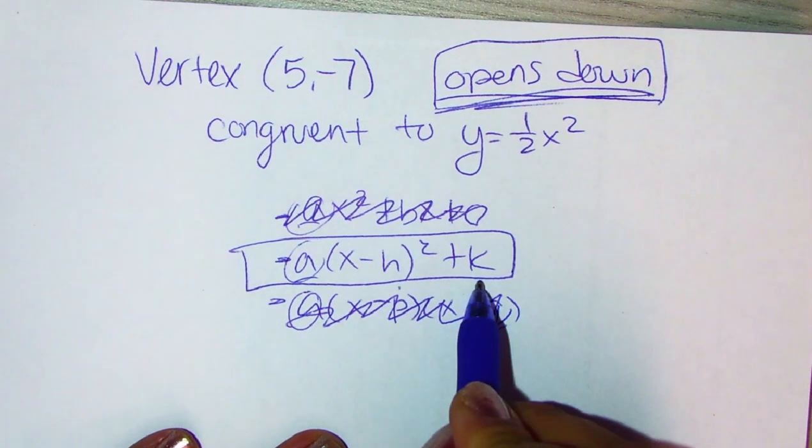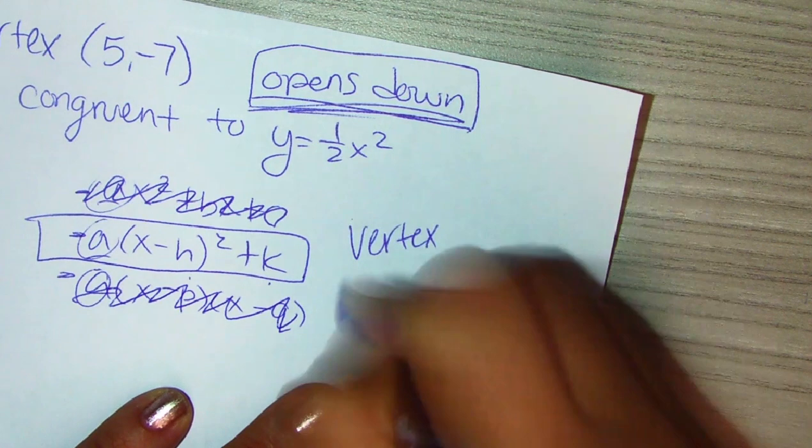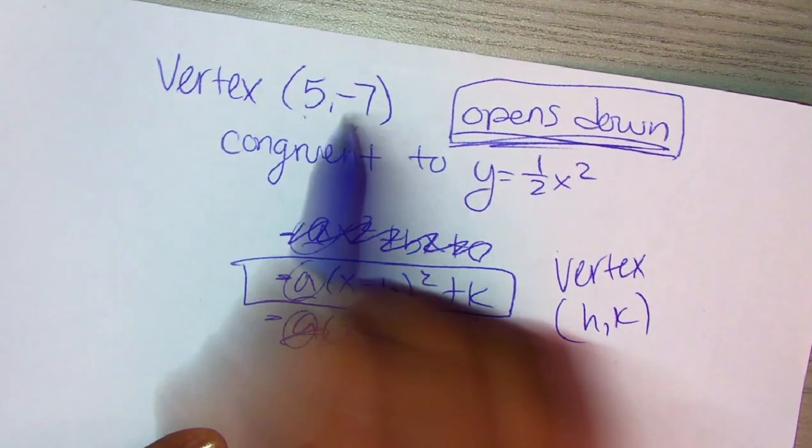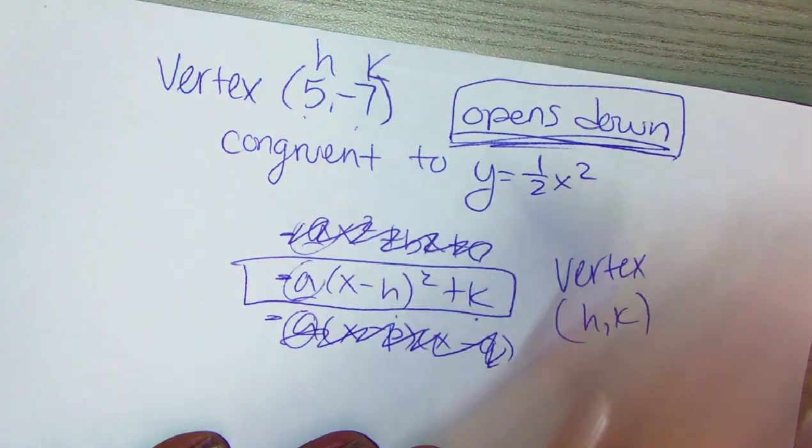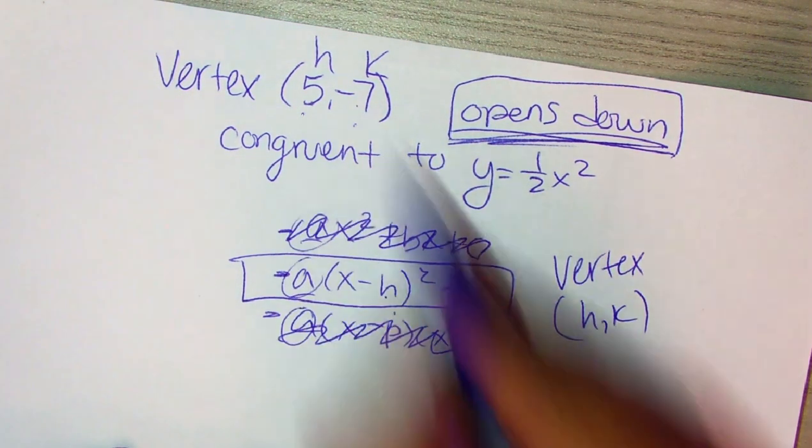And H and K are used here. And if you recall, vertex is always going to be (H, K). So if you're given the vertex of (5, -7), that's your H, that's your K. And we're going to substitute that five in here and that negative seven in here.